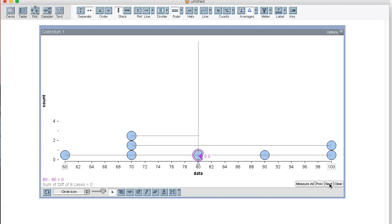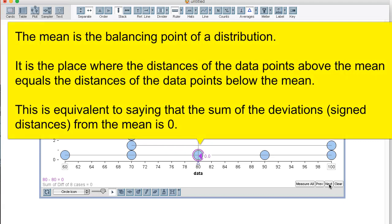Now, the point that is actually at the mean, of course, has a deviation of zero. So if we sum the total deviations, we would get 50 plus negative 50 plus zero, and this equals zero. To summarize, the mean is the balancing point of a distribution. It is the place where the distances of the data points above the mean equal the distances of the data points below the mean. This is equivalent to saying that the sum of the deviations or signed distances from the mean will always equal zero.